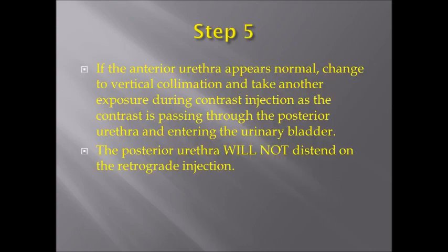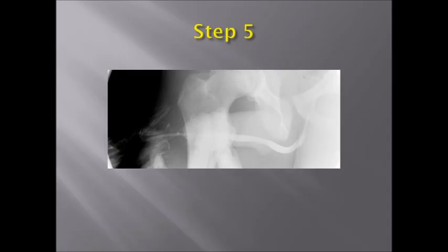Step 5: If the anterior urethra appears normal, change to vertical collimation and make another exposure during contrast injection, as contrast is passing through the posterior urethra and entering the bladder. The posterior urethra will not distend on the retrograde injection.